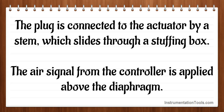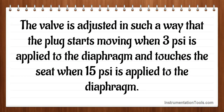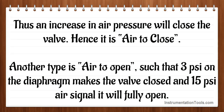The air signal from the controller is applied above the diaphragm. An increasing air signal will push the operator stem downwards against a force exerted by the spring on the diaphragm plate. The valve is adjusted such that the plug starts moving when 3 psi is applied to the diaphragm and touches the seat when 15 psi is applied. Thus an increase in air pressure will close the valve — hence it is air-to-close. Another type is air-to-open, such that 3 psi on the diaphragm makes the valve closed and 15 psi air signal will fully open it.